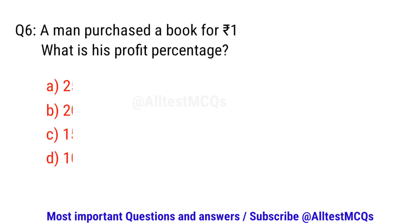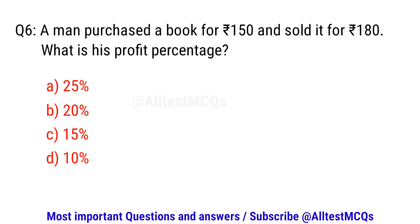Question number six. A man purchased a book for $1.50 and sold it for $1.80. What is his profit percentage? The right option is B. 20%.